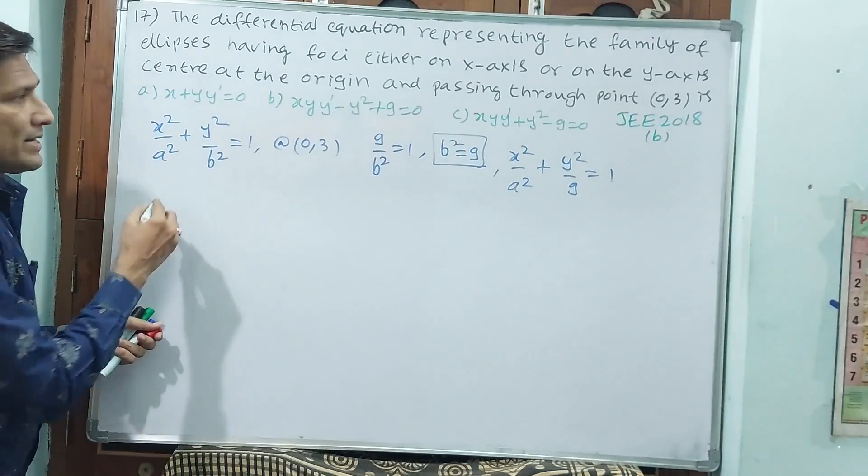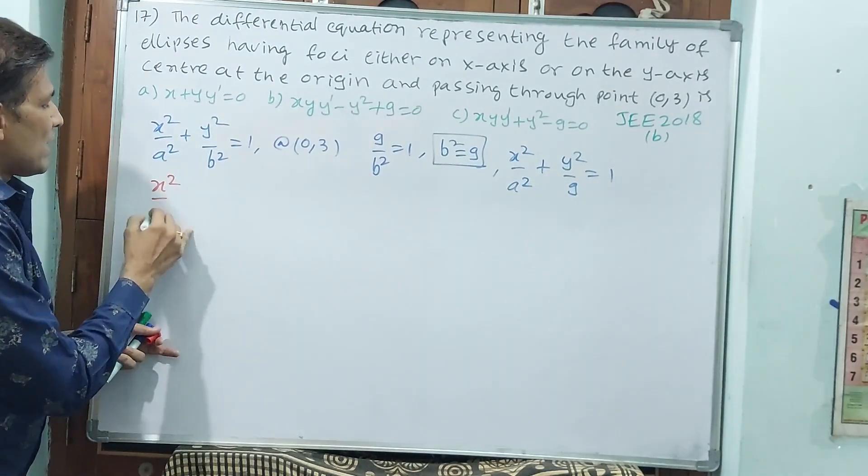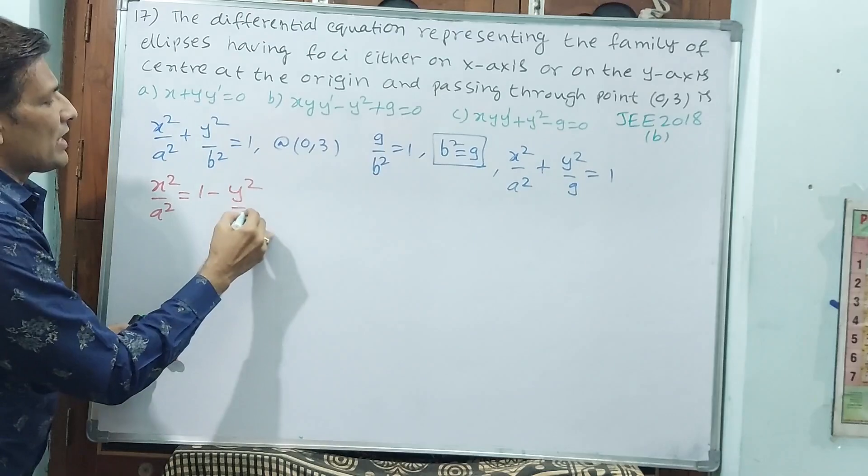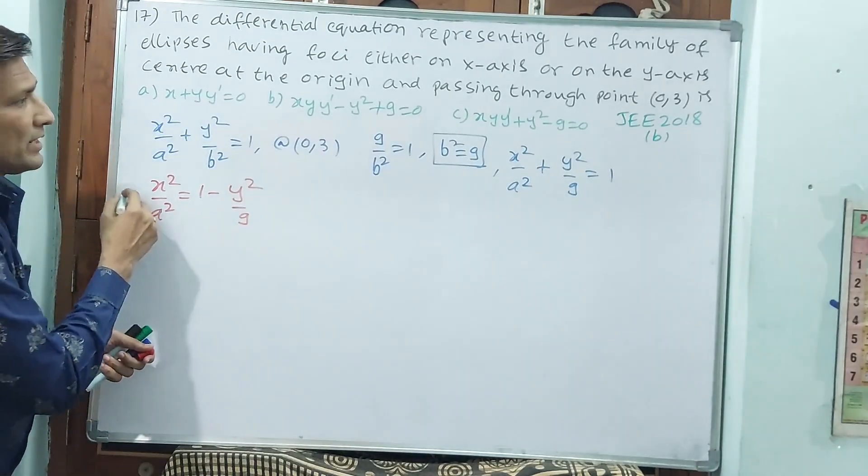Now see what I want to write. I want to take x square by a square is equal to 1 minus y square by 9. Purposefully, I want to take this.